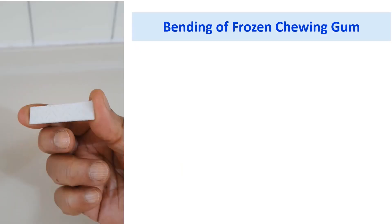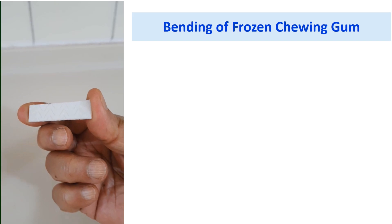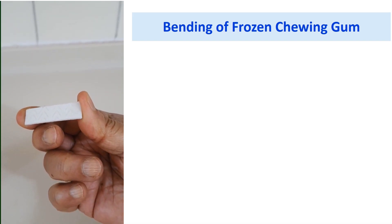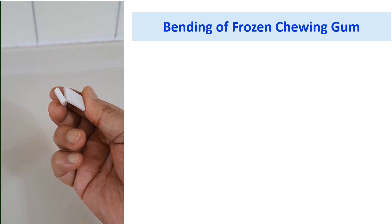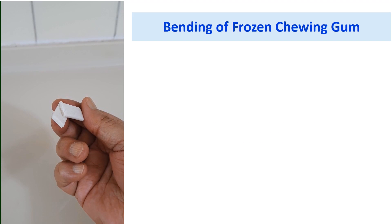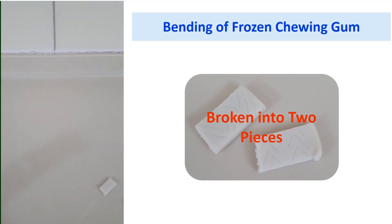I had placed the chewing gum in a freezer at minus 20 degrees C for one hour and then compressed it again with my finger. You can now observe it is not bending and not flexible as before — rather it was broken into two pieces. This was due to the transformation of rubbery chewing gum into a glassy state as we place it at low temperature. In this example, we could observe how a rubbery material could be transformed into a glassy state by cooling and vice versa.